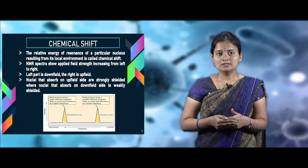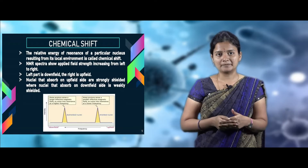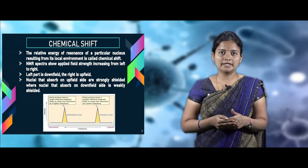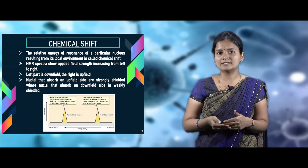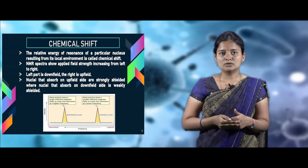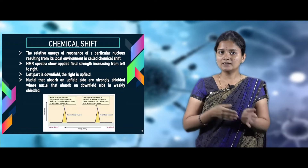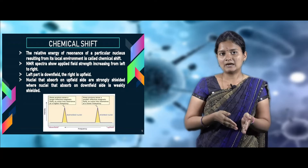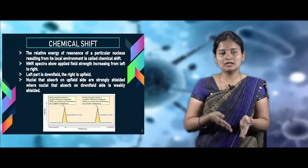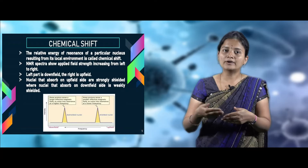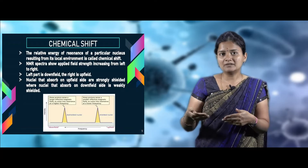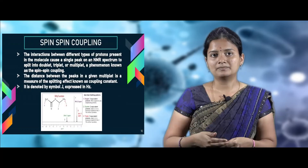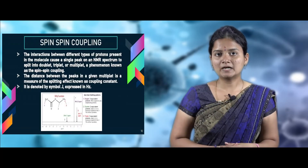There are three important parameters of the NMR spectrum. The first is chemical shift, which refers to the relative energy of resonance of a particular nucleus from its local environment. The applied field strength increases from the left side to the right side of the spectrum, so the left side has a lower field strength compared to the right side, which has a higher field strength.